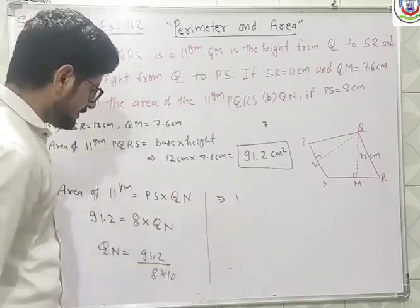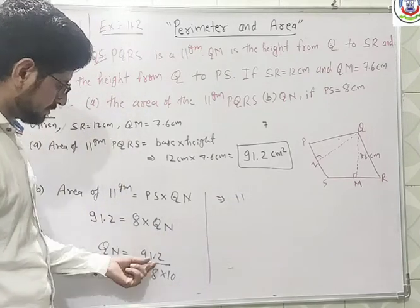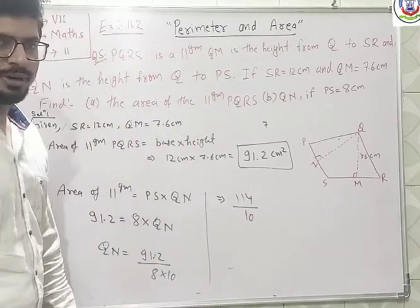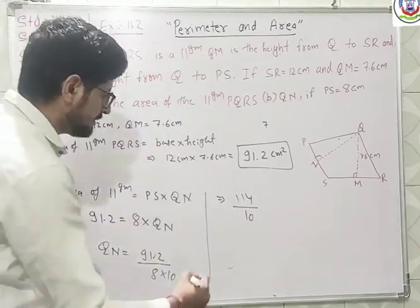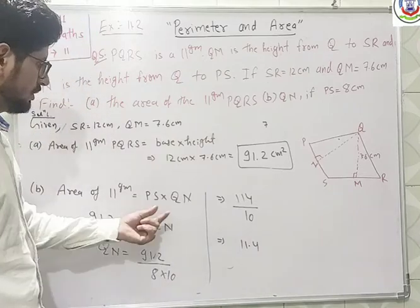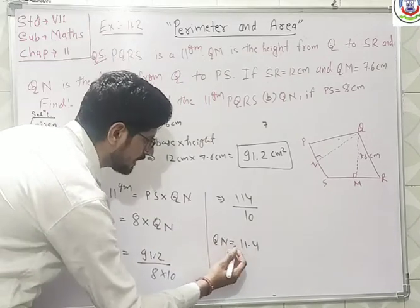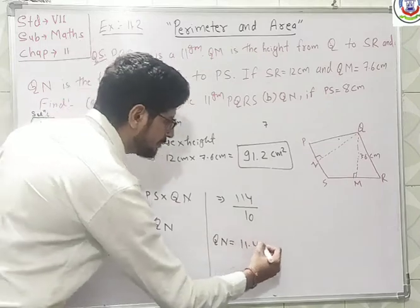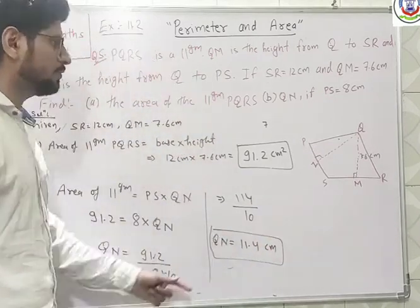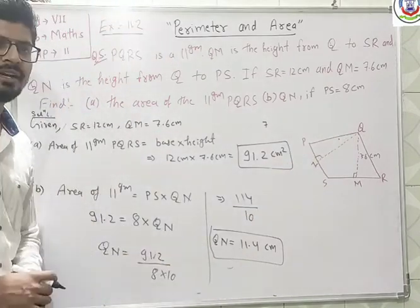So: 8 ones are 8, again 8 ones are 8, then 8 fours are 32. This gives 114 divided by 10, so you will get 11.4. This is the value of QL — QL is equal to 11.4 cm, meaning this height is 11.4 cm.